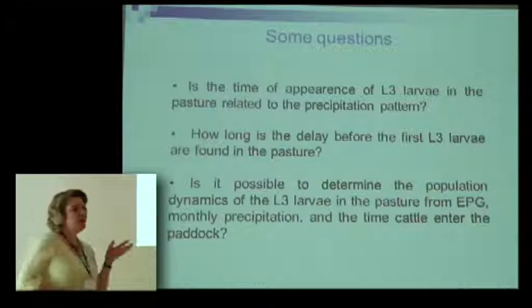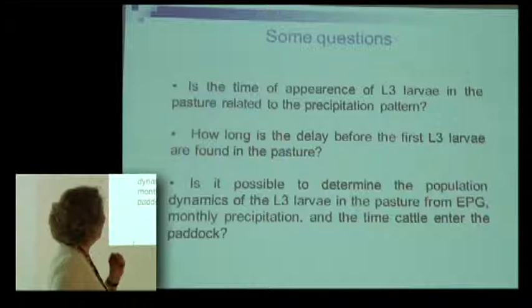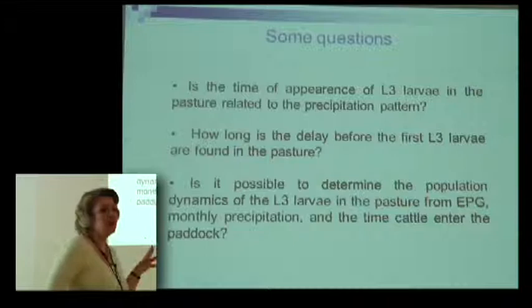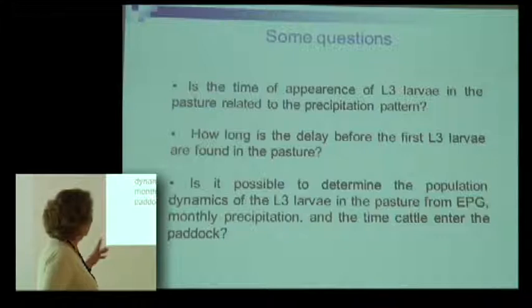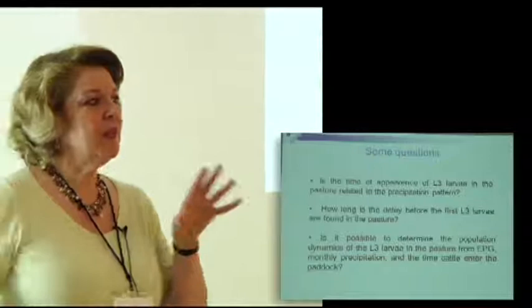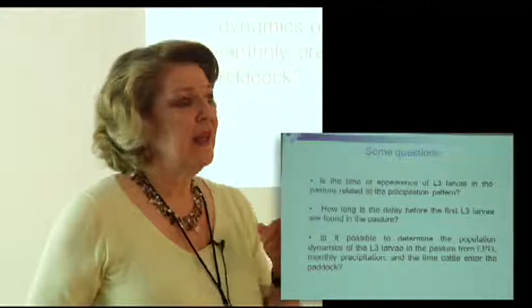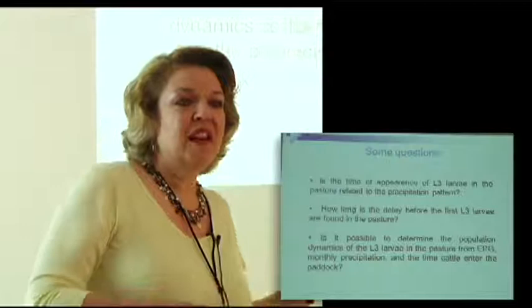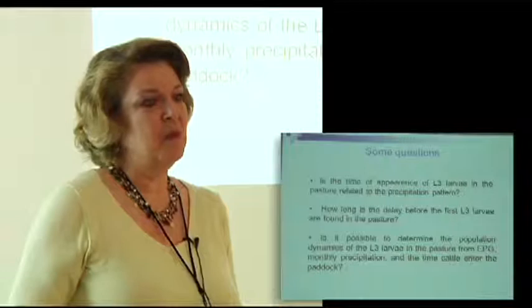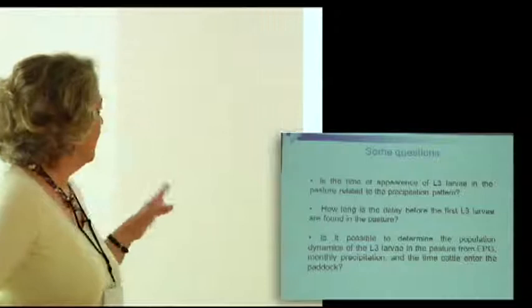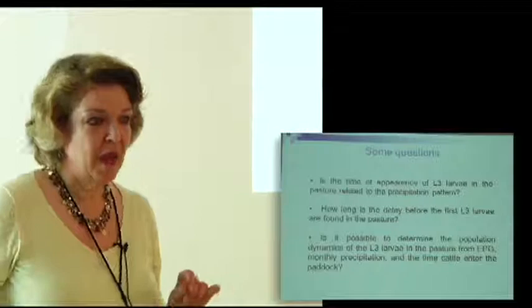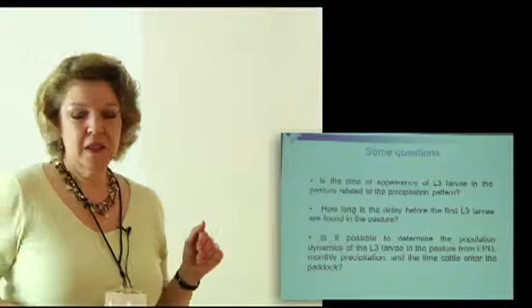There are many questions that the veterinarians wanted to pose and have answers to. How is the appearance of larvae in the pasture related to precipitation? How long is the delay before the first larvae are found in pasture? This is important because they take the herd into a pen and then the grass is clean — all previous larvae are dead — but they want to know how long the cattle will be safe without being infected again. Is it possible to determine the population dynamics in the pasture from the amount of eggs per gram of dung, the monthly precipitation, and the time the cattle enter the paddock?